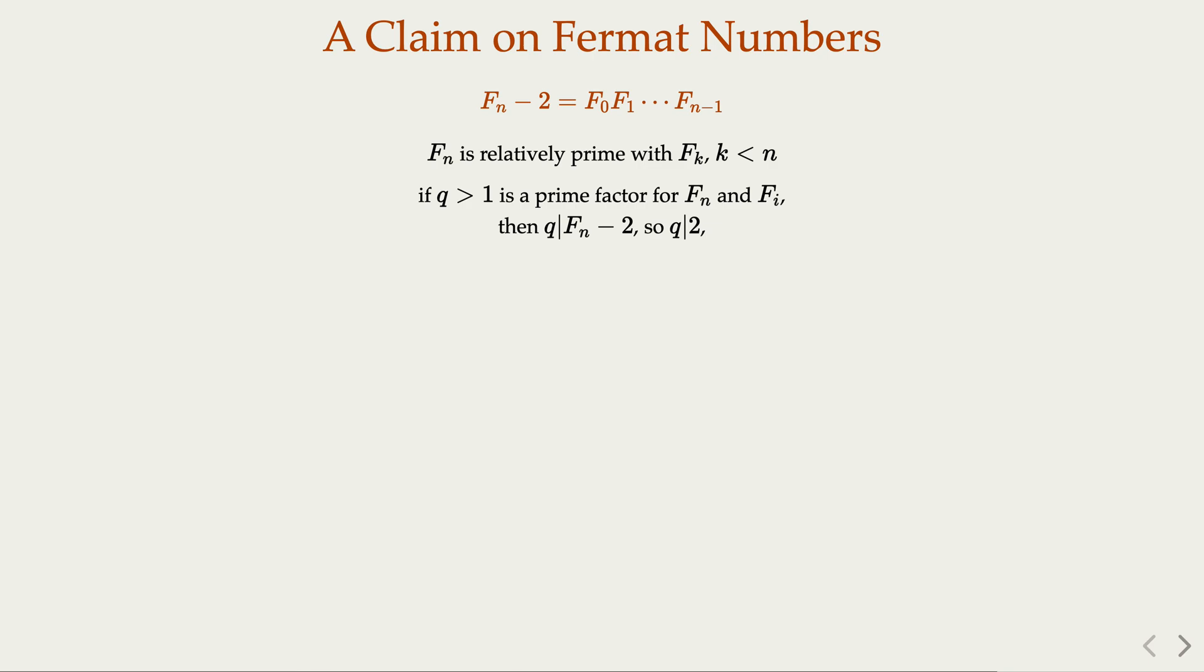So we prove by contradiction that they cannot share any common factors. So in other words, we know that Fn and Fm are relatively prime.